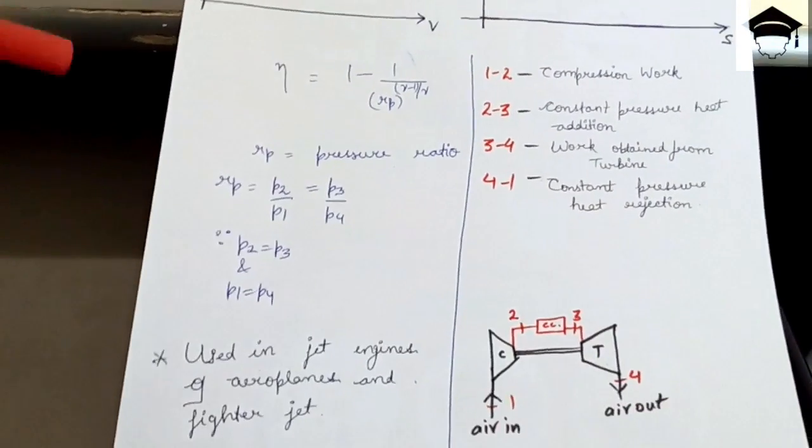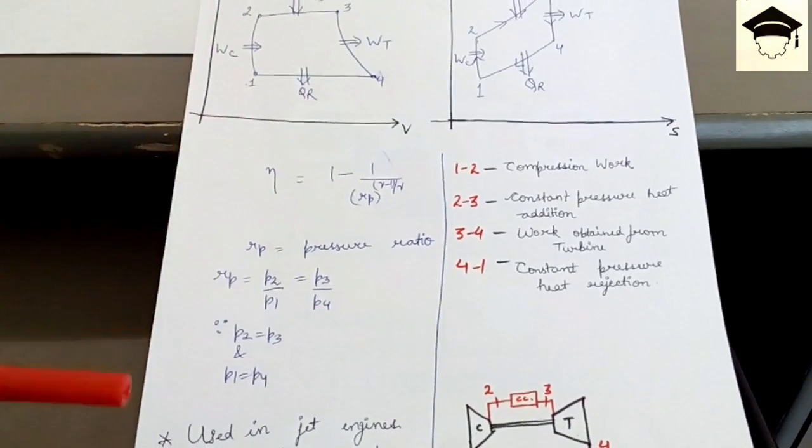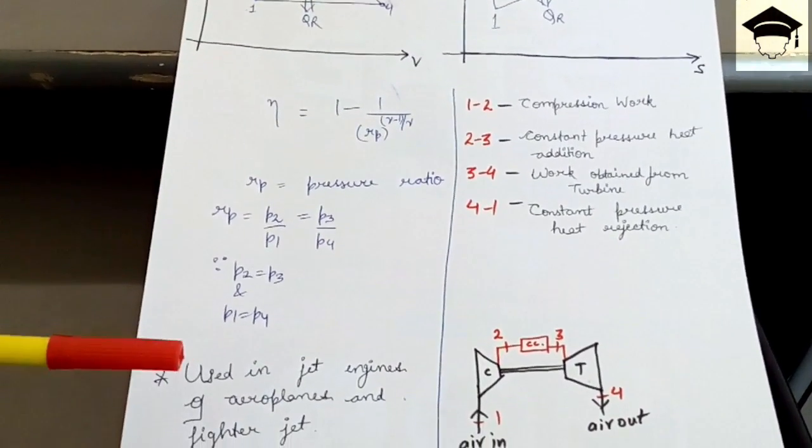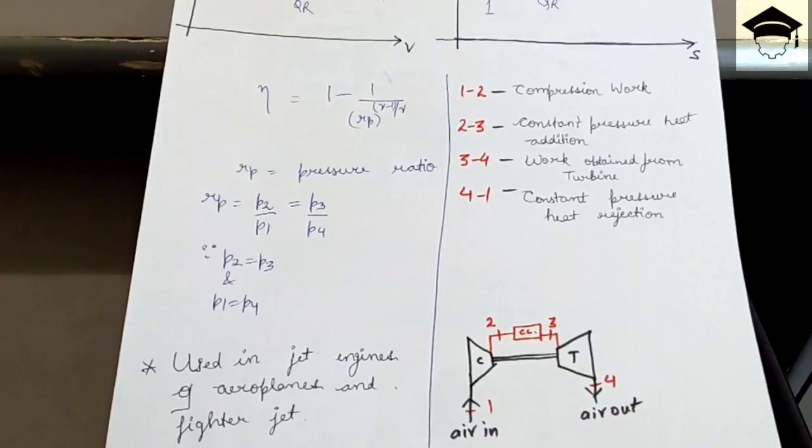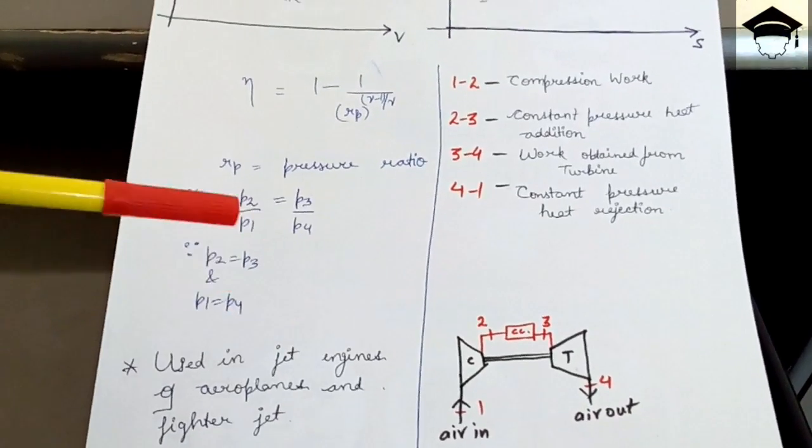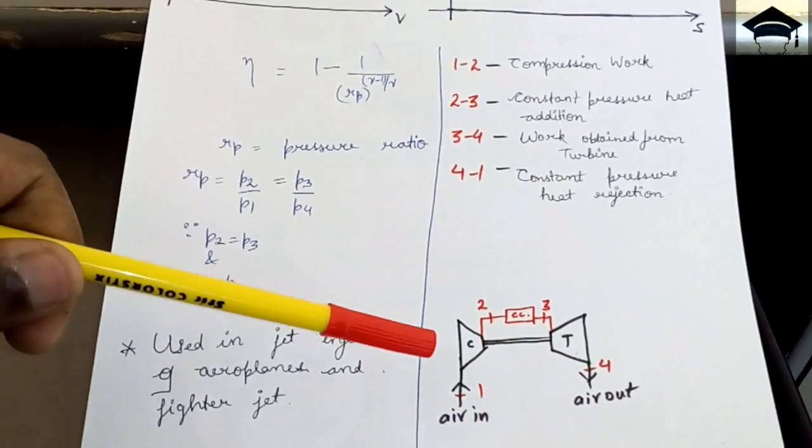So this cycle is employed in the jet engine of the aeroplanes or fighter jets. And this is the basic open cycle gas turbine.